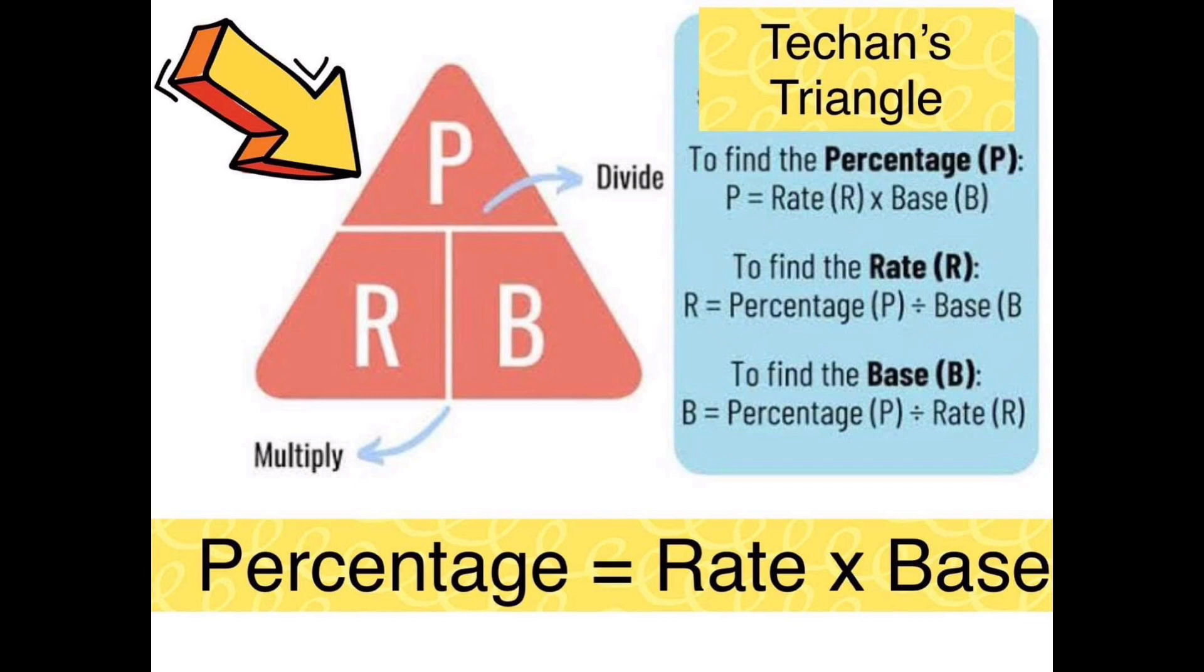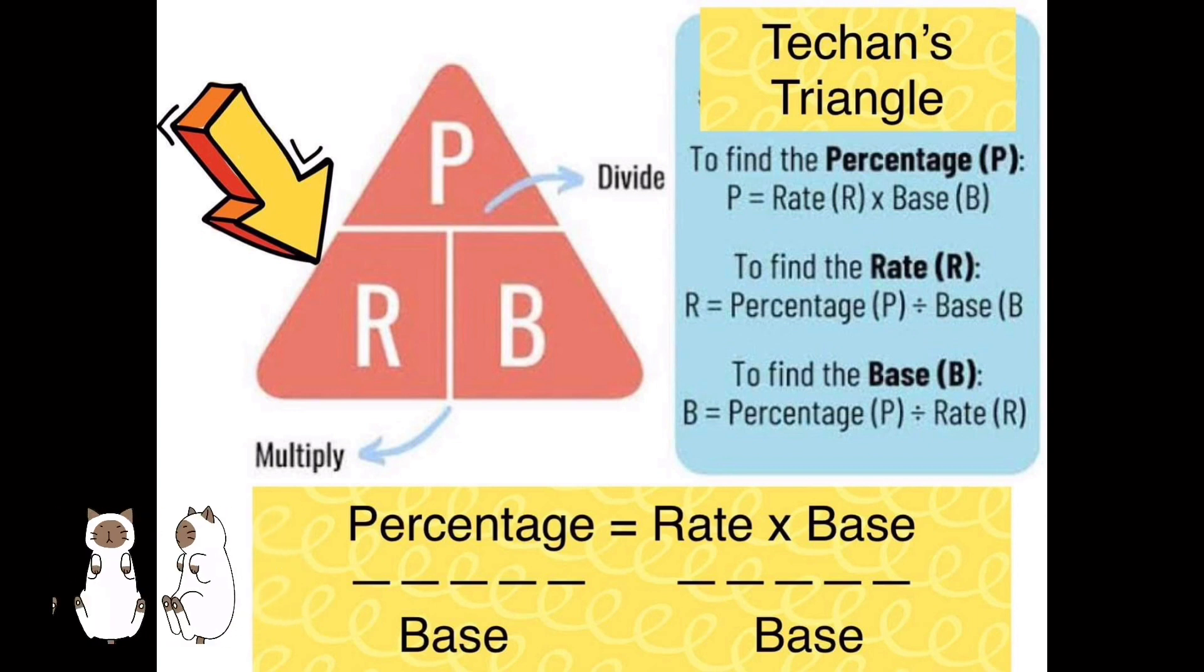So how do we compute? Percentage equals rate times base. To find the rate using the Techan's triangle, rate is the percentage divided by base. We can divide both equations by the base to cancel it out and find the rate.